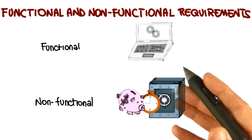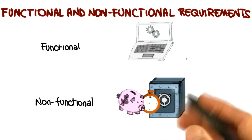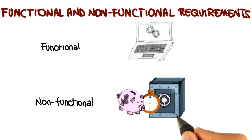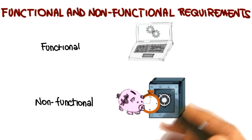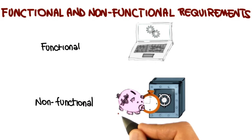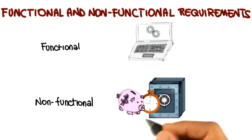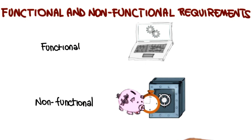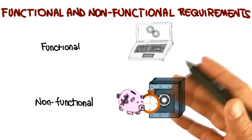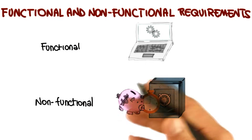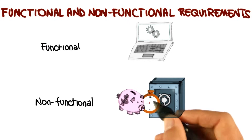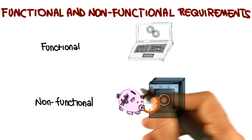Non-functional requirements, conversely, refer to a system's non-functional properties — system qualities such as security, accuracy, performance, cost, usability, adaptability, interoperability, reusability, and so on. So all these qualities that don't necessarily have to do with the functionality.